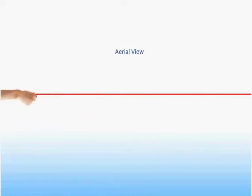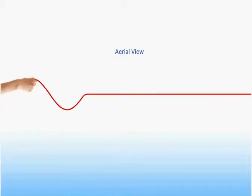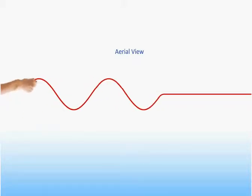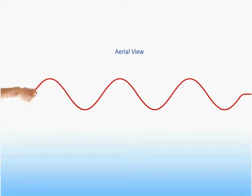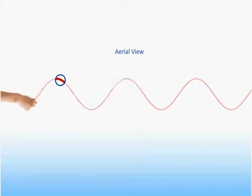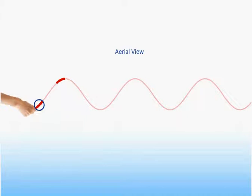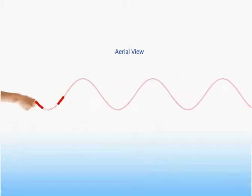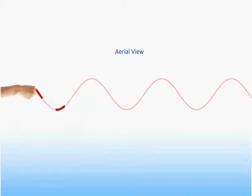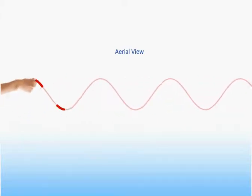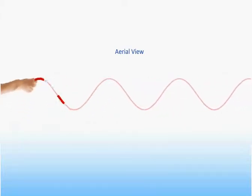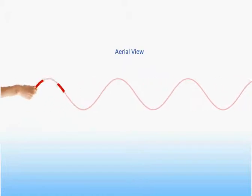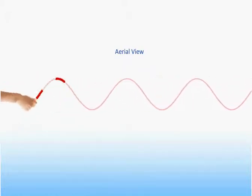Here we see a very long, taut string laying on a horizontal frictionless floor. As we move one end of the string back and forth, we see a pattern propagate down the string. Note that the motion of any point on the string is the same as that of the end of the string. It simply moves back and forth perpendicular to the string. The only difference is that it reaches a maximum displacement somewhat later, since it takes time for the pattern to propagate.